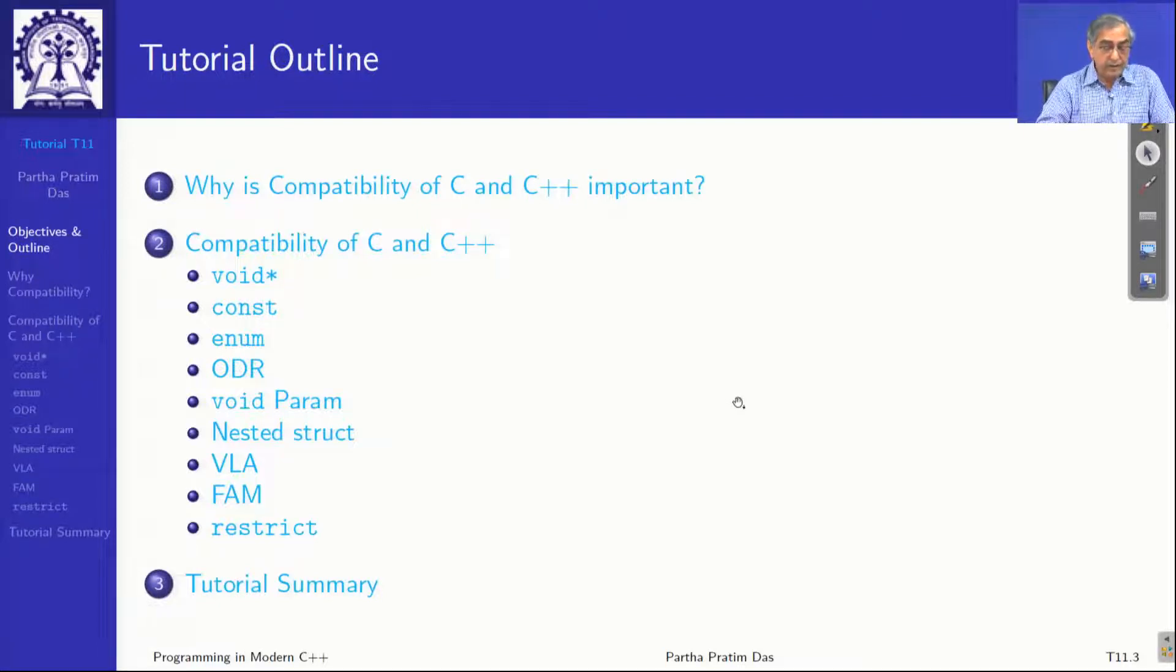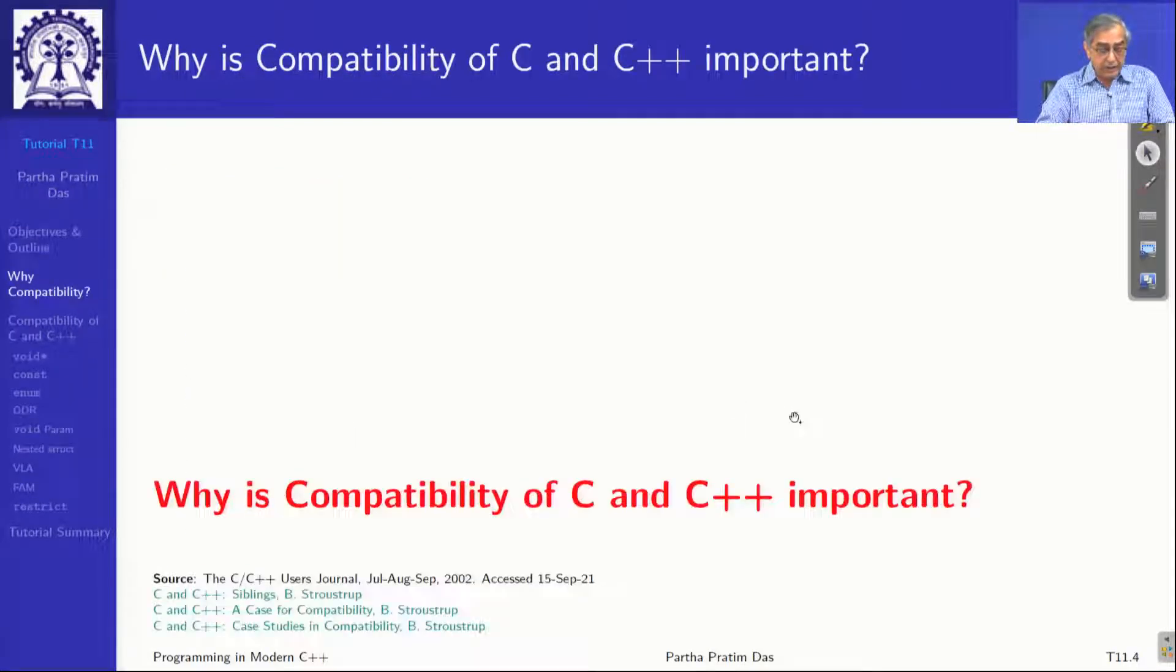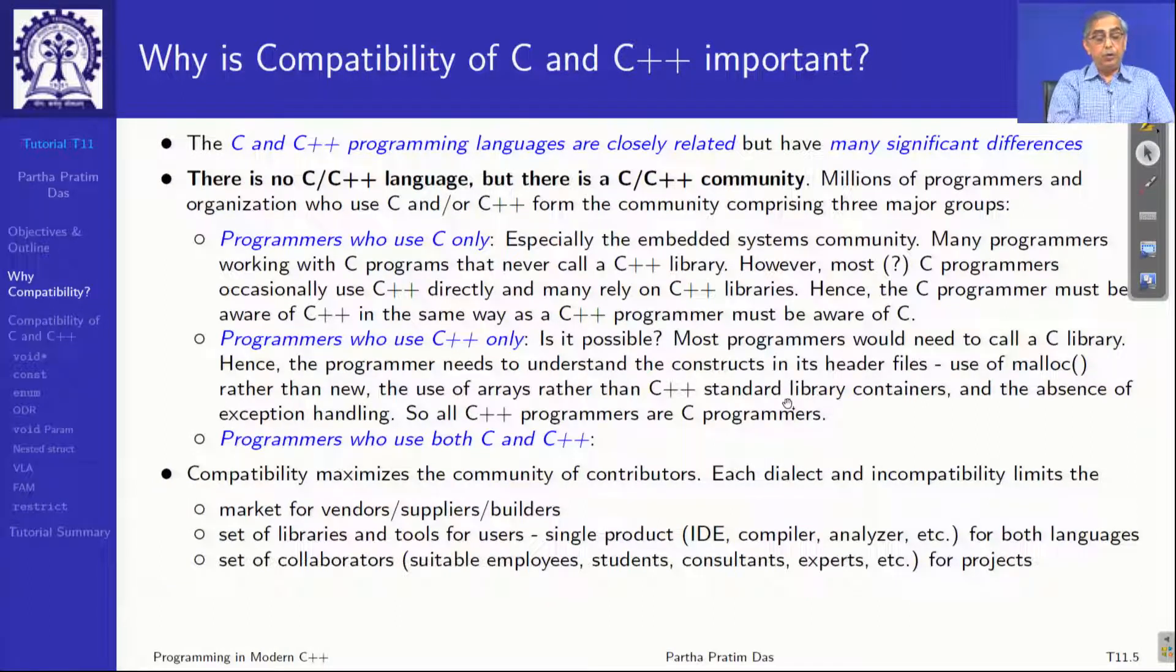So first, let us ask: why is compatibility important? Now, C and C++ as languages are closely related. We often call them as C/C++. There is no language as C/C++; it is either C or it is C++. But there are many significant differences.